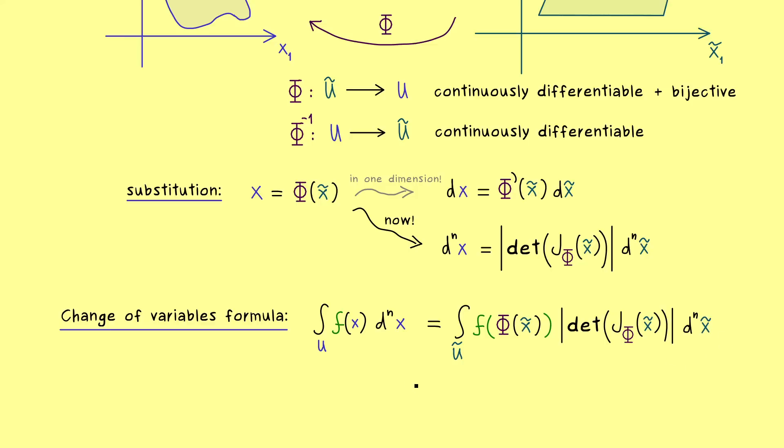So this is the whole formula and it tells us how we can switch between the two variables x and x tilde. In fact, in order to make the whole formula clearer, we can also write the image of U tilde under phi for the first integral. Obviously this is the same as U, but now we have phi on both sides in the formula. So you can remember from this image here we push phi into the integral.